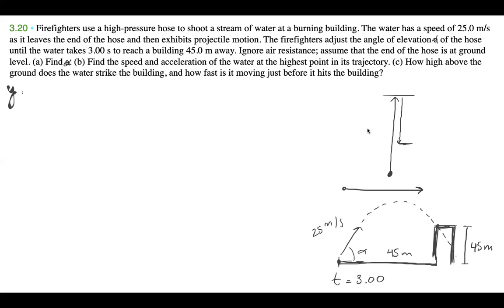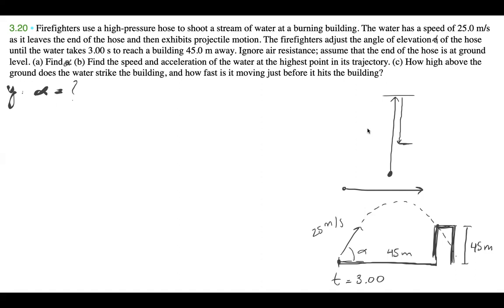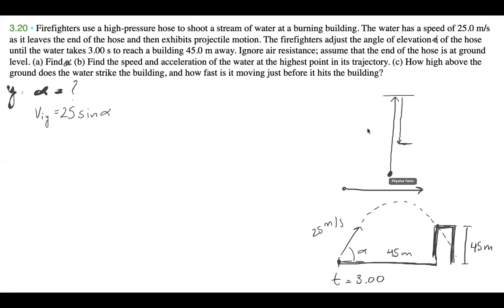For the Y direction, we don't know alpha — that's what we're trying to figure out. VIY is going to equal 25 sine alpha. For segment one (ground to top): VFY equals zero, time is T1, and T1 plus T2 equals 3 seconds. Acceleration is negative 9.8 meters per second squared. For segment two (top to building): VIY2 equals zero meters per second, VFY2 is unknown, time is T2, and acceleration is negative 9.8 meters per second squared.